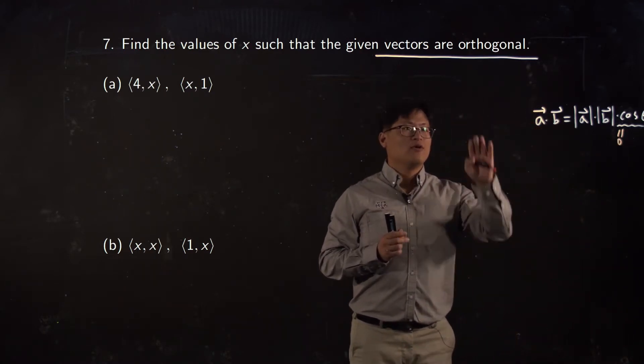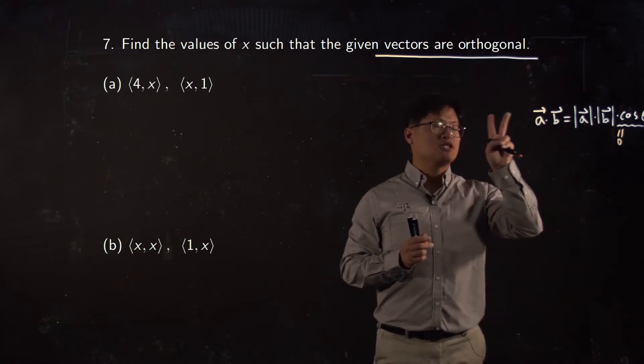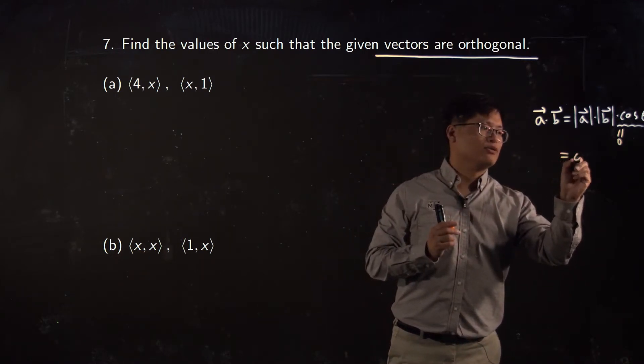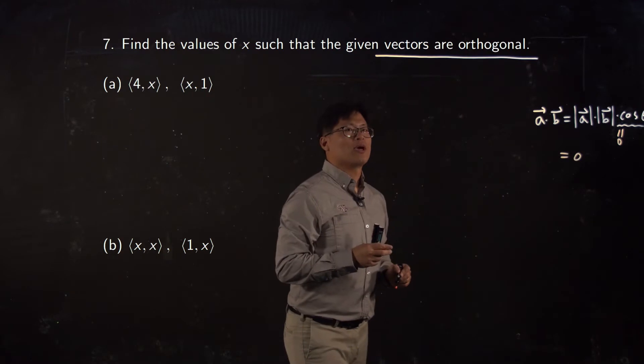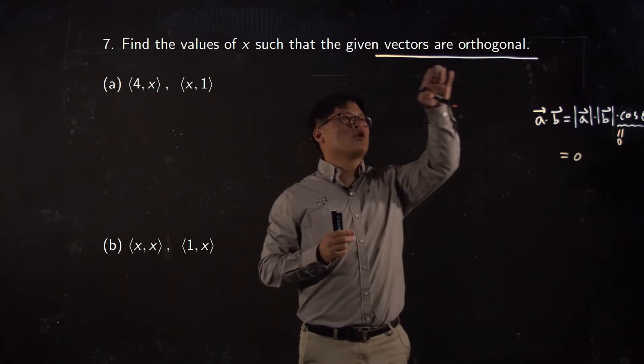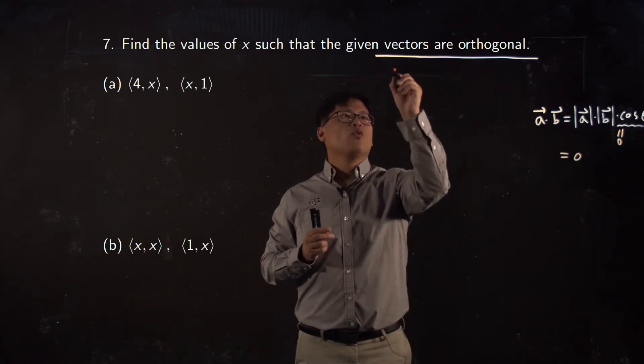So like, no matter what the length of vectors, your dot product between two vectors which is orthogonal or perpendicular, your dot product equals zero. Now we can use this whenever you want to talk about vectors are orthogonal.